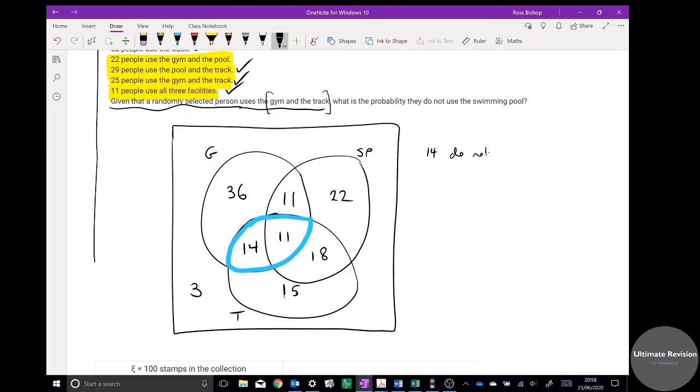It says what is the probability that they do not use the swimming pool? Okay, so in this blue bubble, in this blue bubble, we have 14 that do not use the swimming pool, and we've got 11 that use the swimming pool. So we've got in that bubble, because it says given that gym and track, gym and track, kind of focus on that bubble. We've got 14 that do not use the swimming pool and 11 that use the swimming pool. So what is the probability that they do not use the swimming pool? Well, 14 do not use the swimming pool out of a total in that bubble of 25, so your answer there would be 14 over 25.